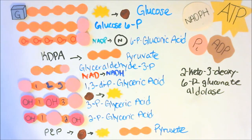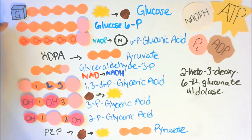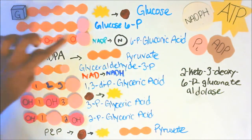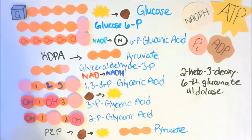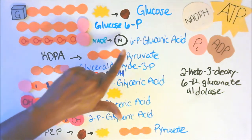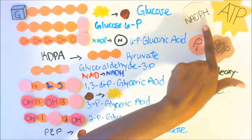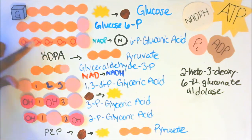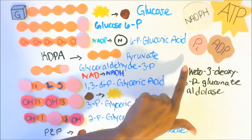First off we're going to go through this. The first molecule is glucose, which is a six-carbon molecule. There is a reaction where ATP turns into ADP. Our second molecule is glucose 6-phosphate, or glucose 6P. Then there is a reaction where NADP turns into NADPH. Then we have our third molecule, 6P gluconic acid.